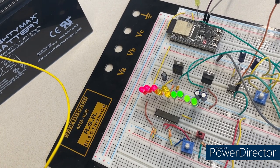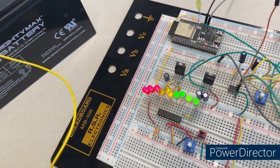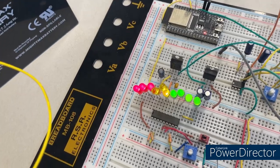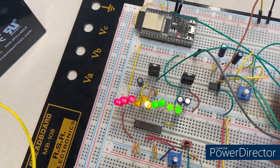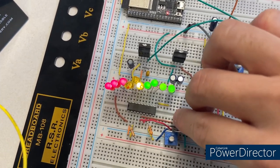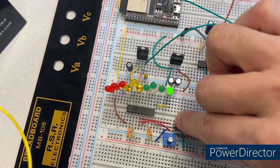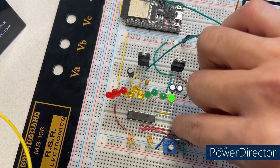I use the LM3914N chip for making the LED indicator. This has two kinds of modes. This one is bar mode. If you change it to dot mode, it only shows the last LED lit up.